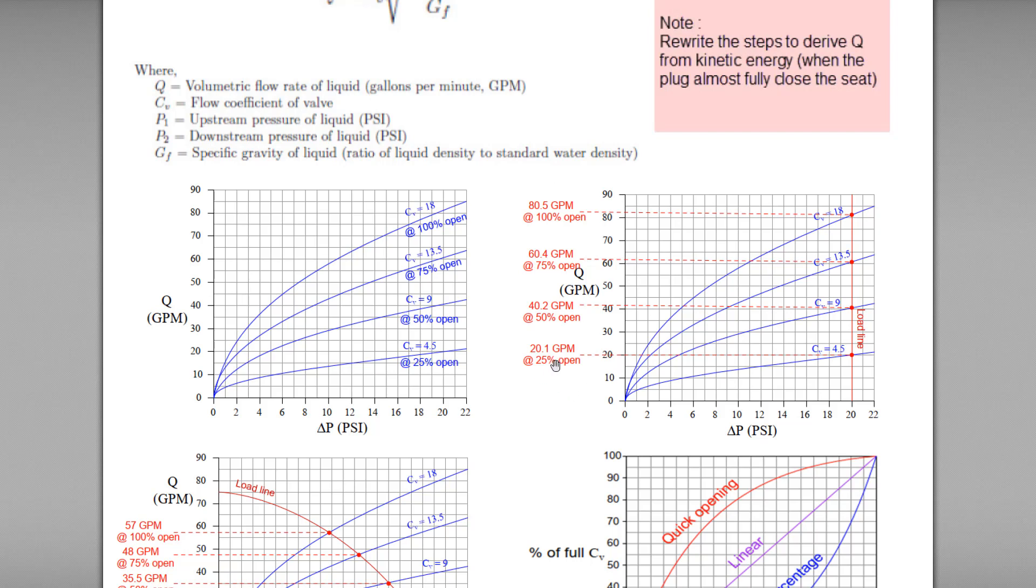When the valve open at 25%, the CV value will be 4.5 for the flow rate of 20.1 gallons per minute. And if the valve is open at 50%, the CV value will be 9 and the corresponding flow rate will be 40.2 gallons per minute and so on.